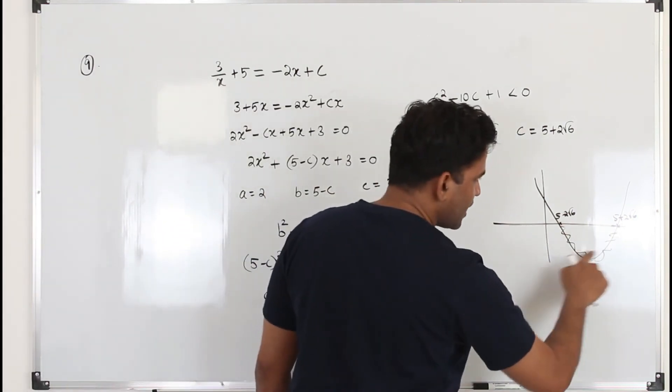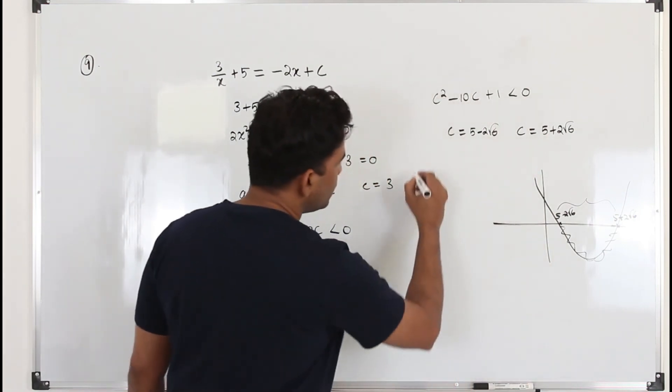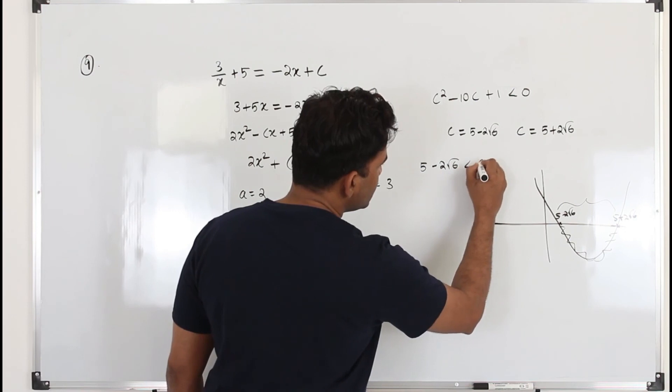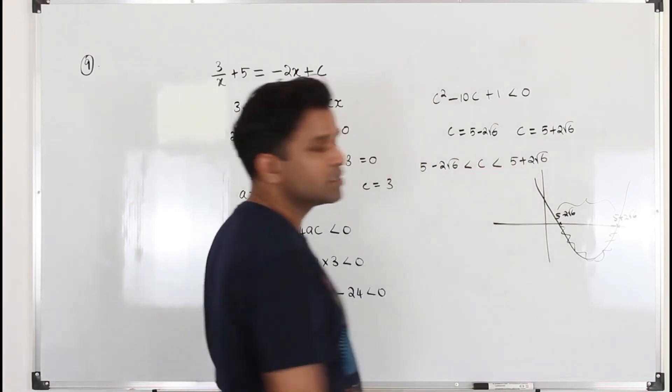So for the concave graph, the corresponding x value, in this case the c value, will be: the smaller number is less than c is less than the bigger number. That's the solution.